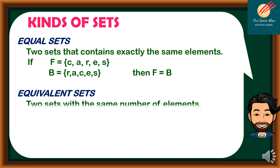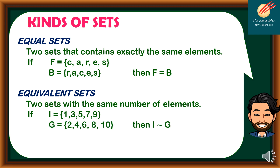On the other hand, equivalent sets are two sets with the same number of elements, regardless of what those elements are. For example, if I = {1, 3, 5, 7, 9}, we have five elements. Set G = {2, 4, 6, 8, 10}, also five elements. Then we can say that I is equivalent to G.